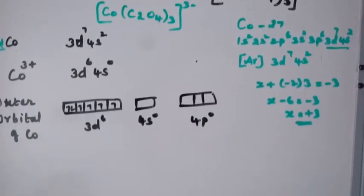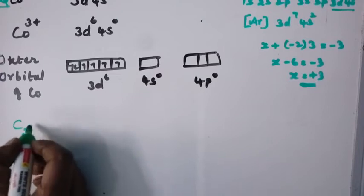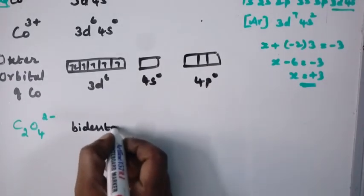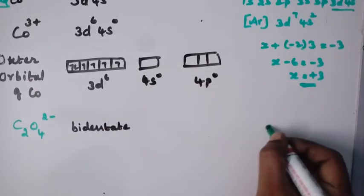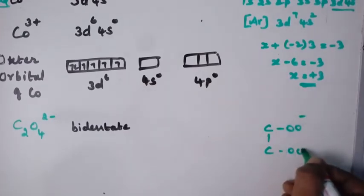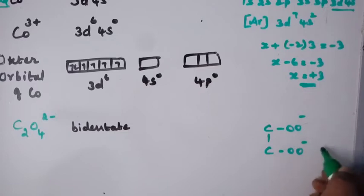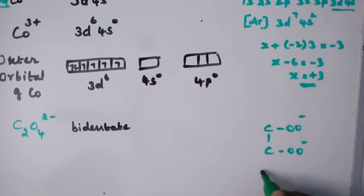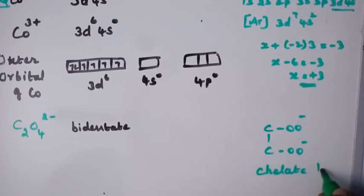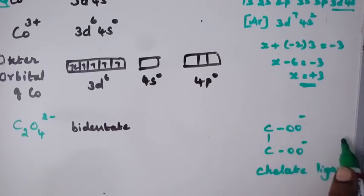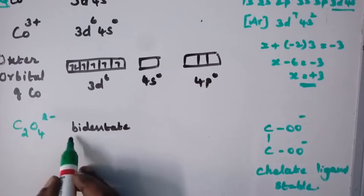The ligand here is C₂O₄²⁻ (oxalate). It is a bidentate ligand, meaning it has two donor atoms. In the structure of oxalate (−OOC−COO−), the two oxygen atoms are the donor atoms that attach to the metal atom cobalt. It is also called a chelate ligand because it forms a closed ring structure when attached to a single metal atom.